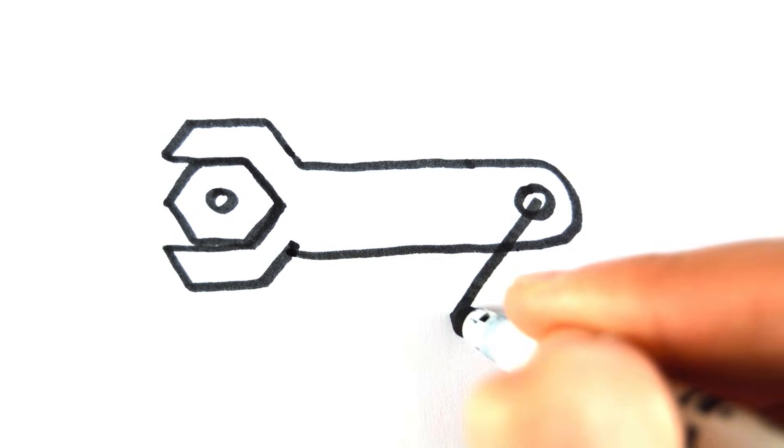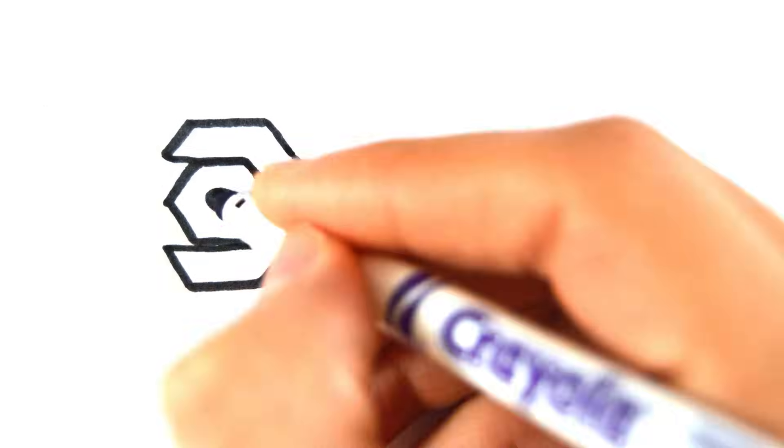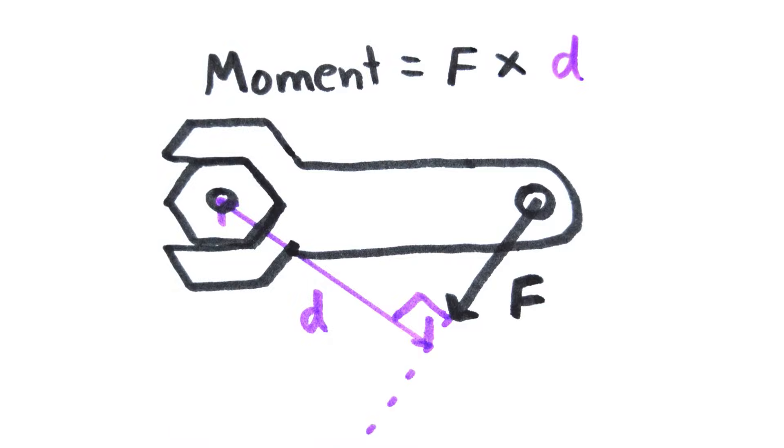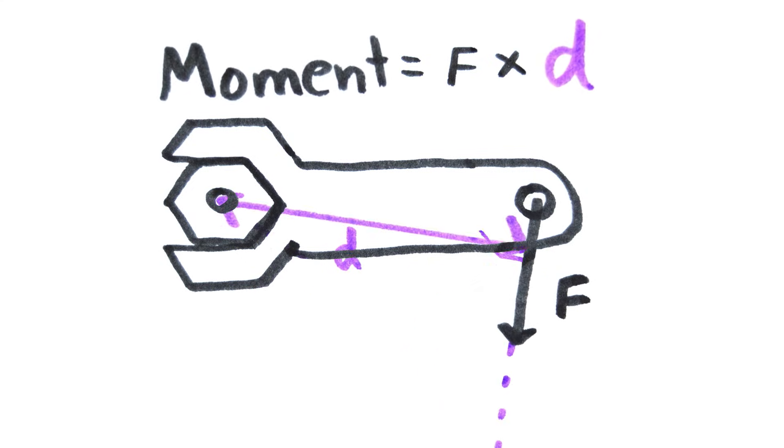However, you can apply a force that is not perpendicular, in which case the distance is not the length of the spanner, but is the distance from the line of action of the force to the pivot. This will produce a smaller moment, so to produce the maximum moment you need to apply the force at 90 degrees.